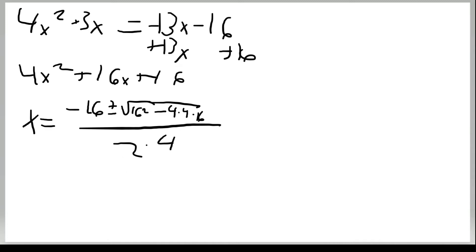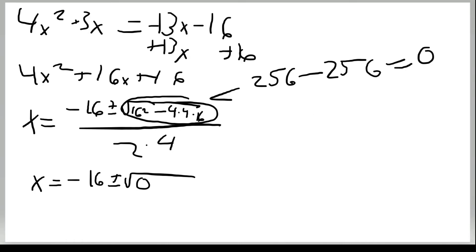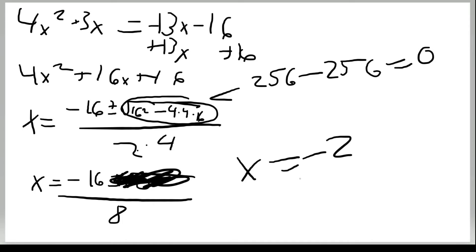When you solve the discriminant part, you get 256 minus 256, which equals zero. So you have negative 16 plus or minus the square root of zero, over 8. Since the square root of zero is zero, it cancels out, and negative 16 divided by 8 equals negative 2. So x equals negative 2 — that's one solution.